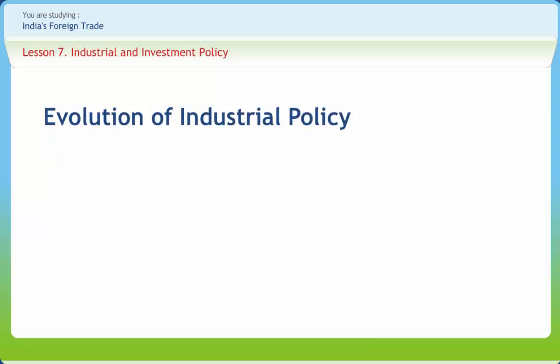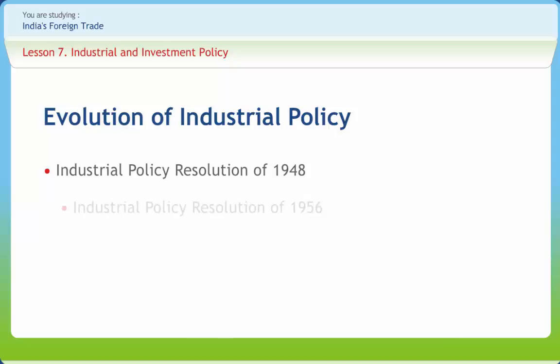After independence, the Industrial Policy Resolution of 1948 was the first formal official pronouncement of the Indian government. The Industrial Policy Resolution of 1956, which was the first comprehensive policy statement after the 1954 Parliament Resolution of Socialistic Pattern of Society, laid stress on accelerating the speed of industrialization, in particular heavy industries, expansion of the public sector, and growth of the cooperative sector.